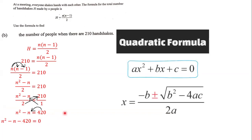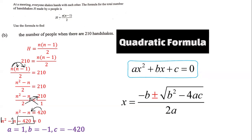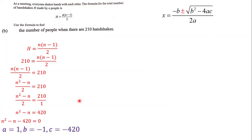Since we have a quadratic equation, we use the quadratic formula. The general form is ax² + bx + c = 0, where a is the coefficient of x², b is the coefficient of x, and c is the constant. In this case, a = 1 (the coefficient of n²), b = -1 (the coefficient of n), and c = -420 (the constant).